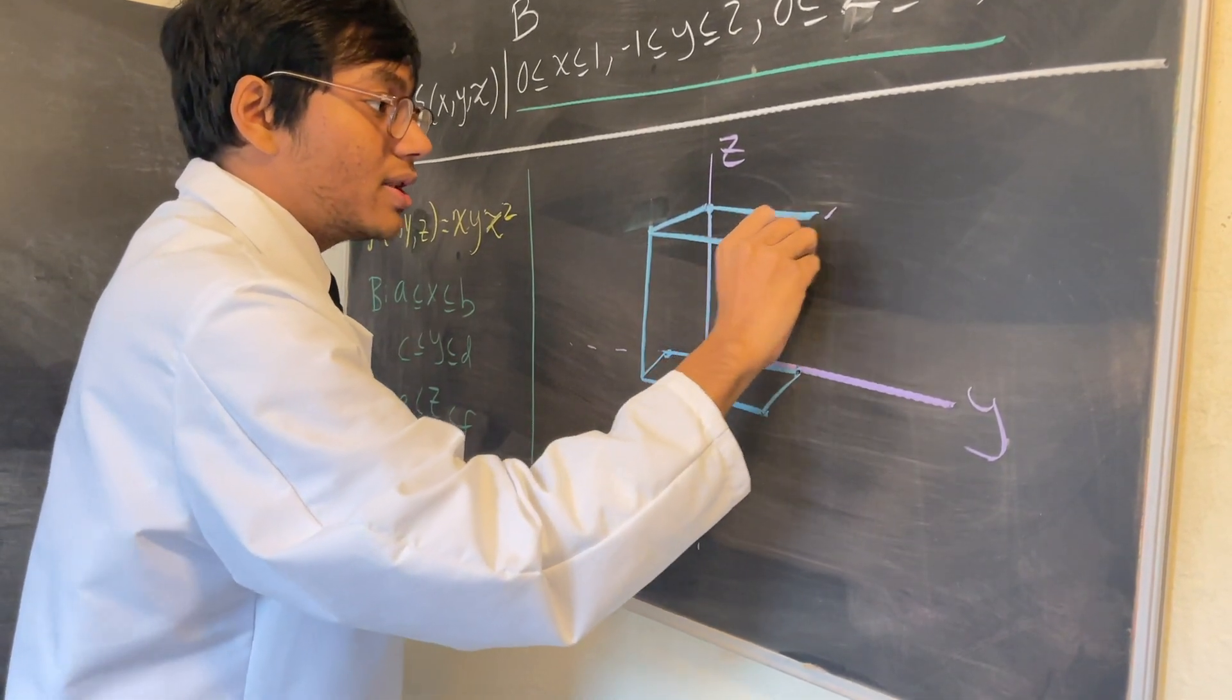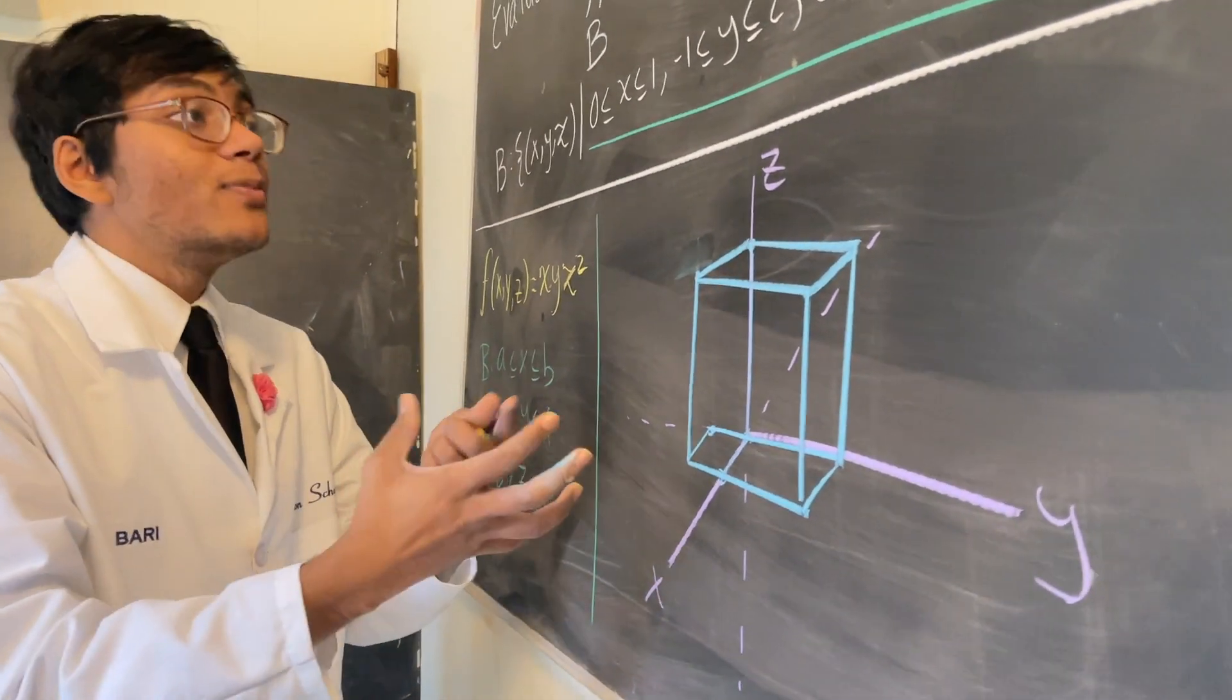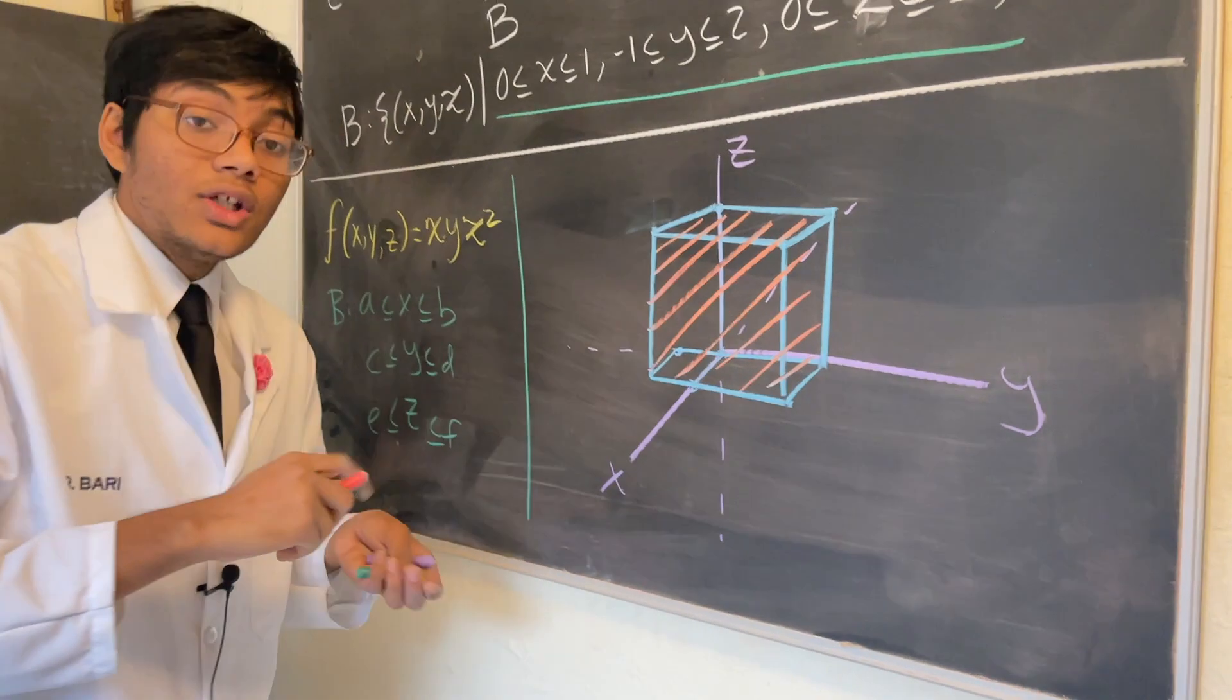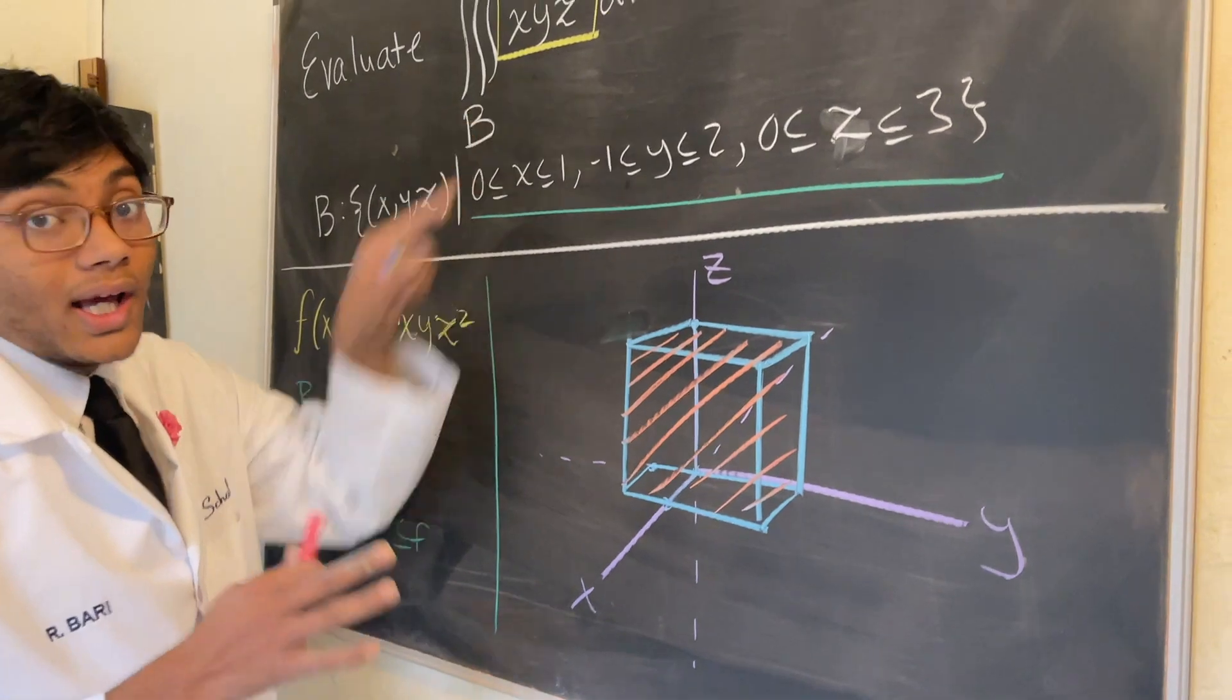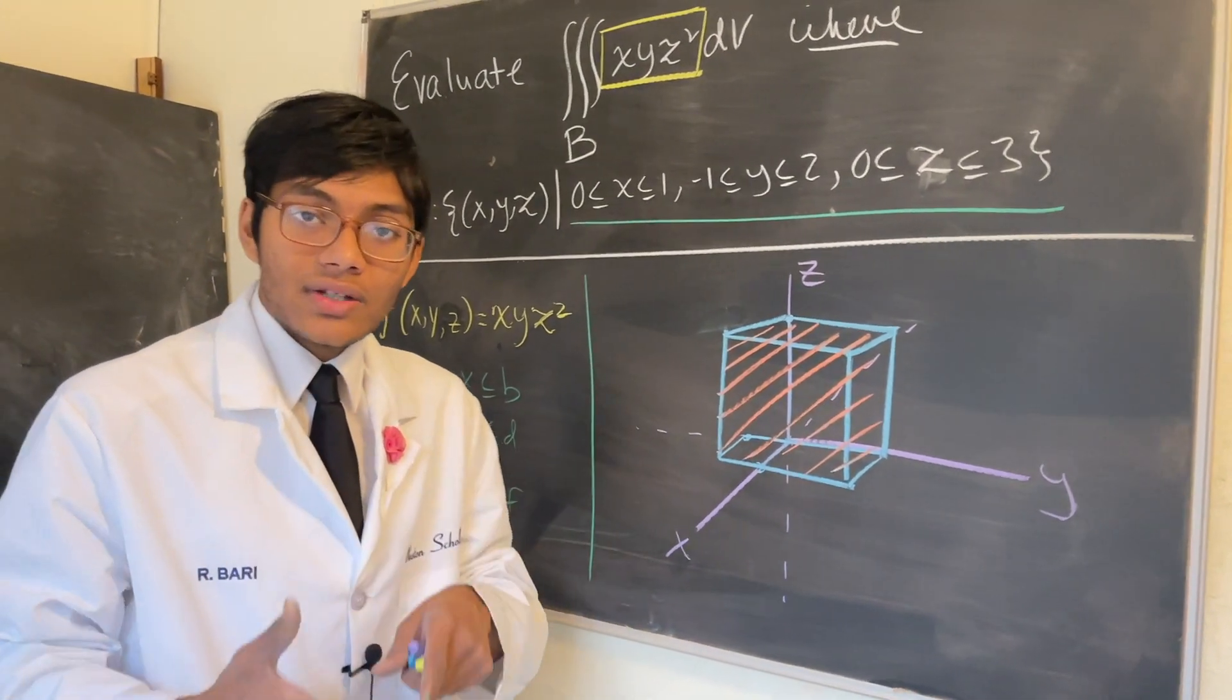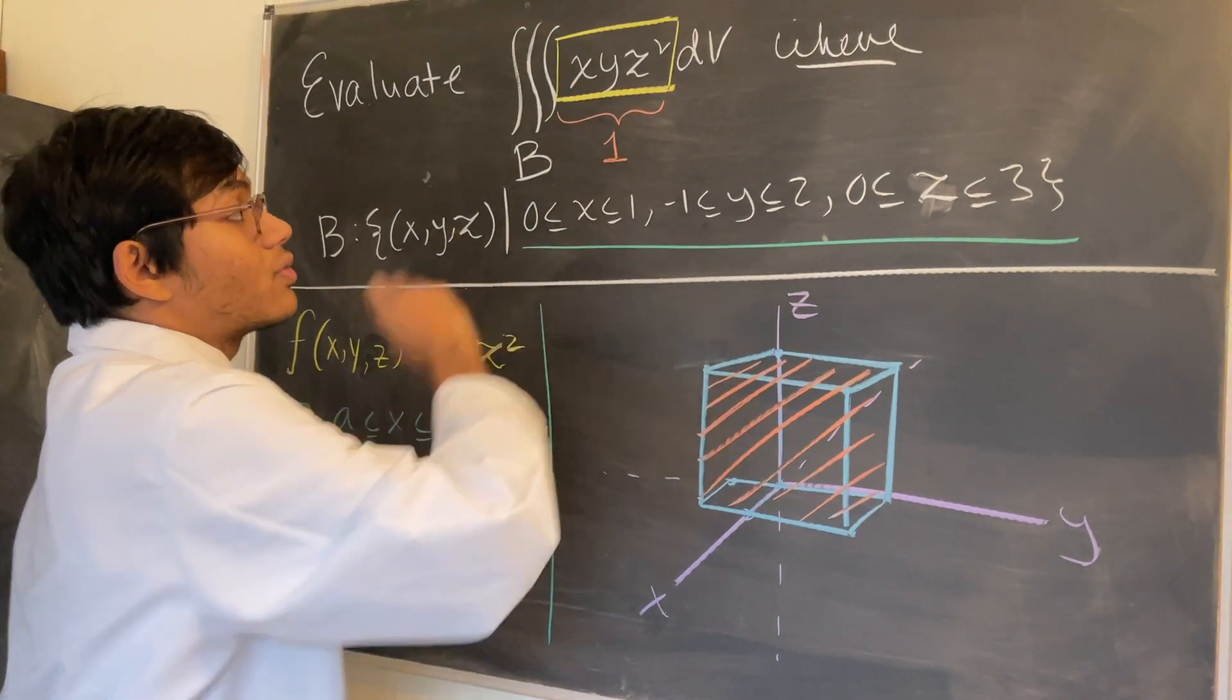Remember in double integrals you were integrating over a region on the XY plane. Now you're integrating over an actual rectangular prism, an actual object. When we do triple integrals, are we getting volume? No, we're not getting that unless our integrand here is 1, which in this case it's not. We're getting some kind of abstract quantity—this can be flux or some other four-dimensional quantity.